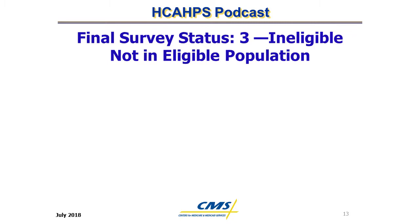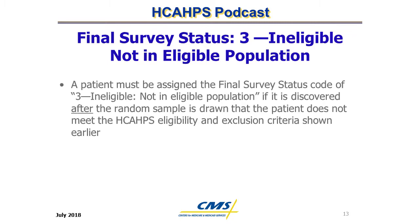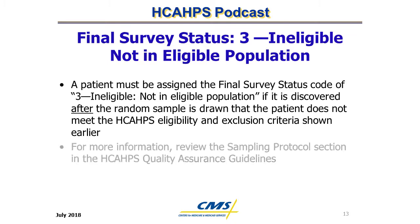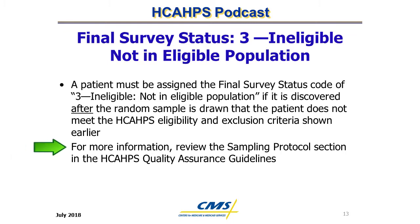In summary, a patient must be assigned the final survey status code of 3 (ineligible, not-ineligible population) if it is discovered after the random sample is drawn that the patient does not meet the HCAHPS eligibility criteria or is determined to be excluded. For more information about HCAHPS sampling protocols, please refer to the HCAHPS Quality Assurance Guidelines and review the sampling protocol chapter.